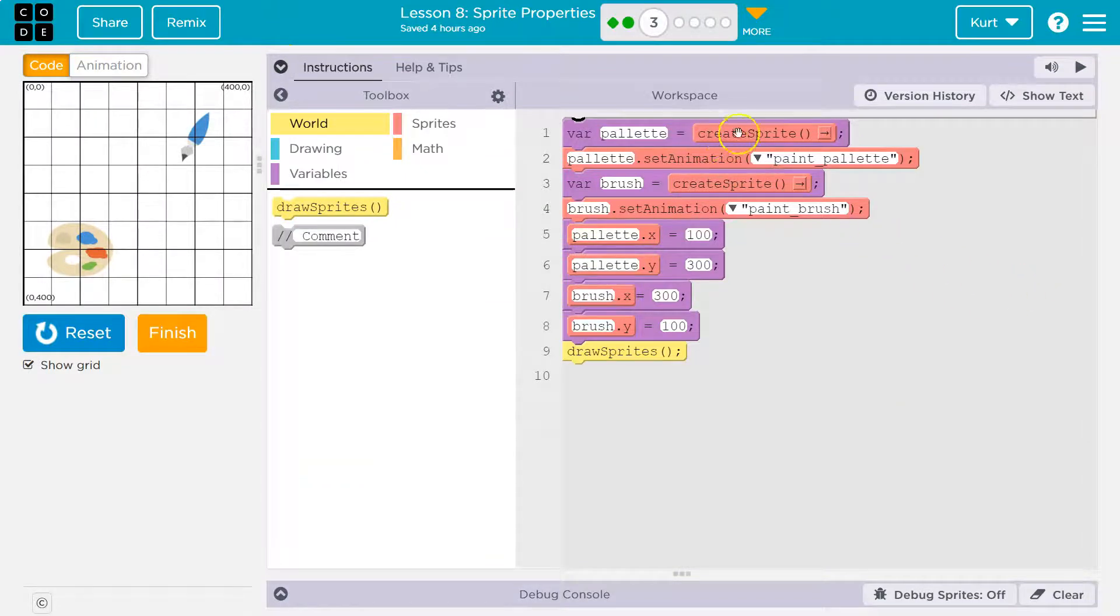So we create this palette, this variable palette. We create an empty sprite. Then we say, palette is set to the animation paint palette, which must be what this is. We then create this variable brush and we set it to an animation paintbrush.